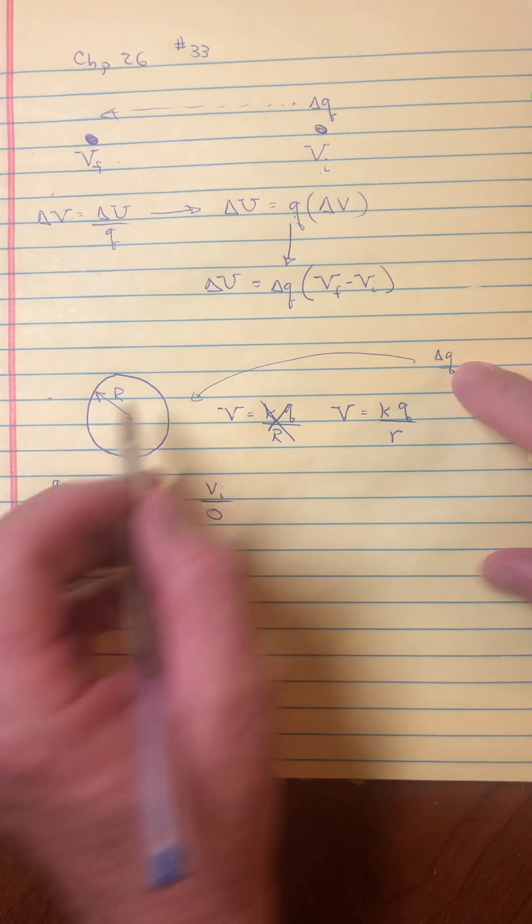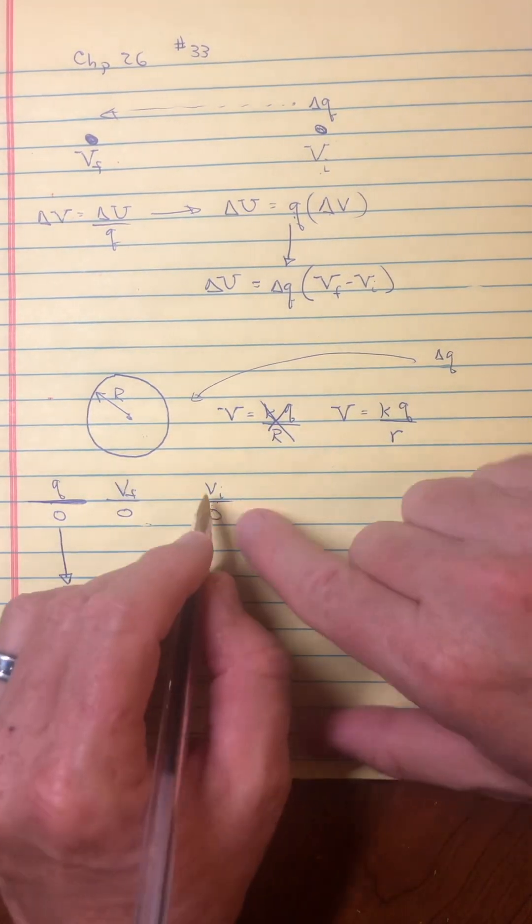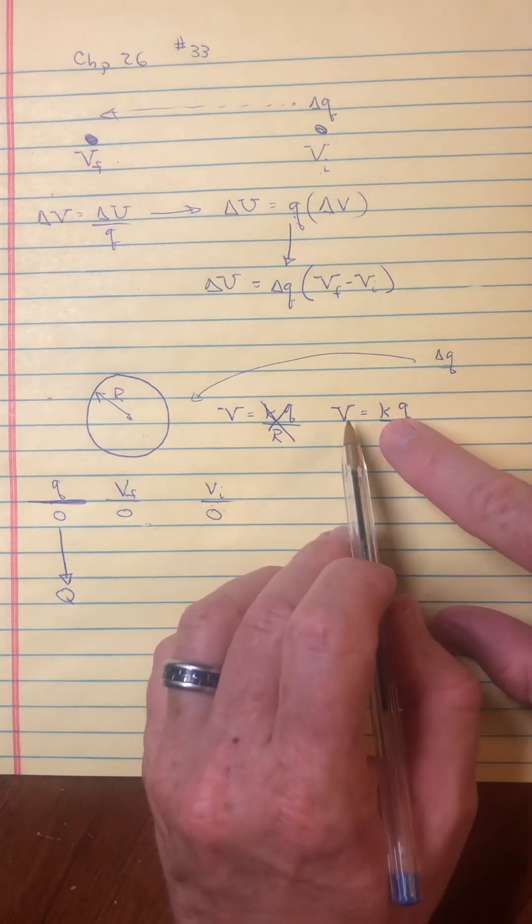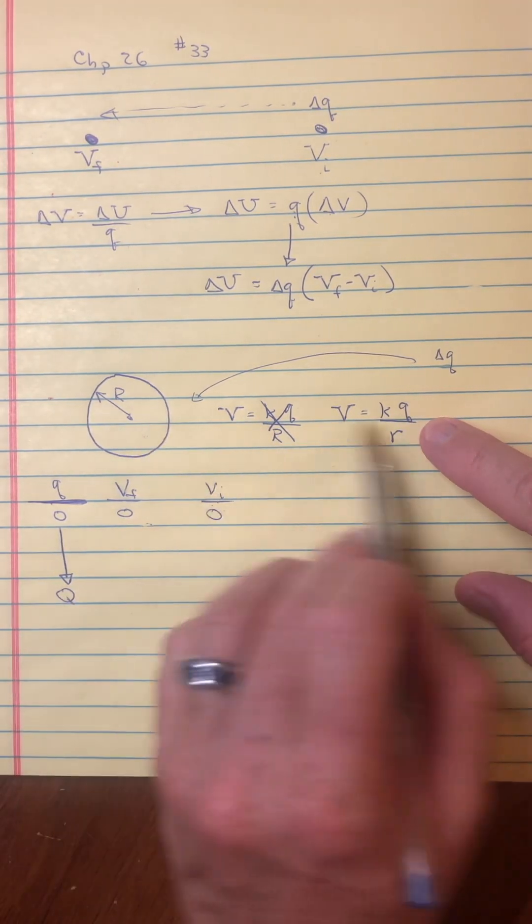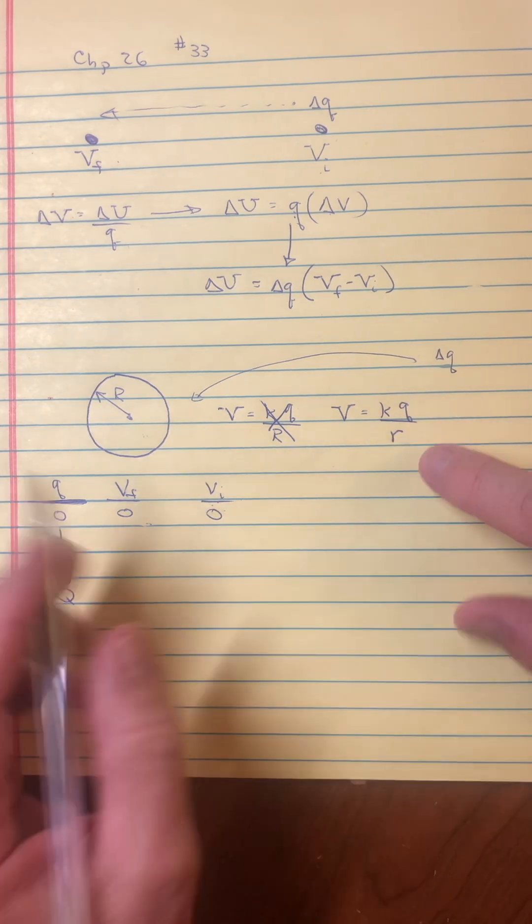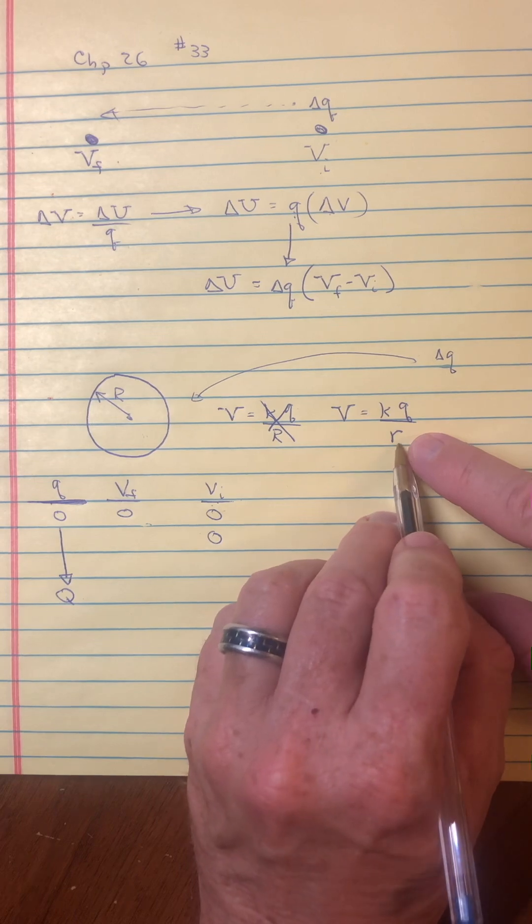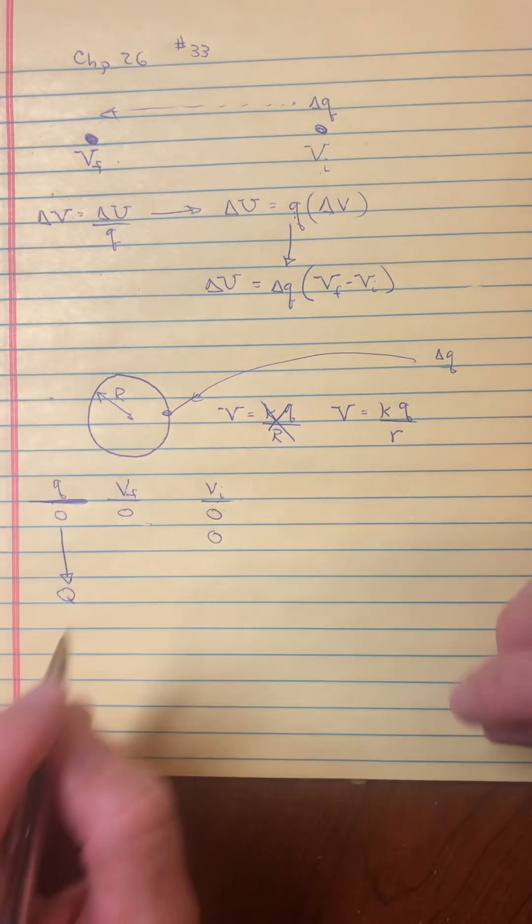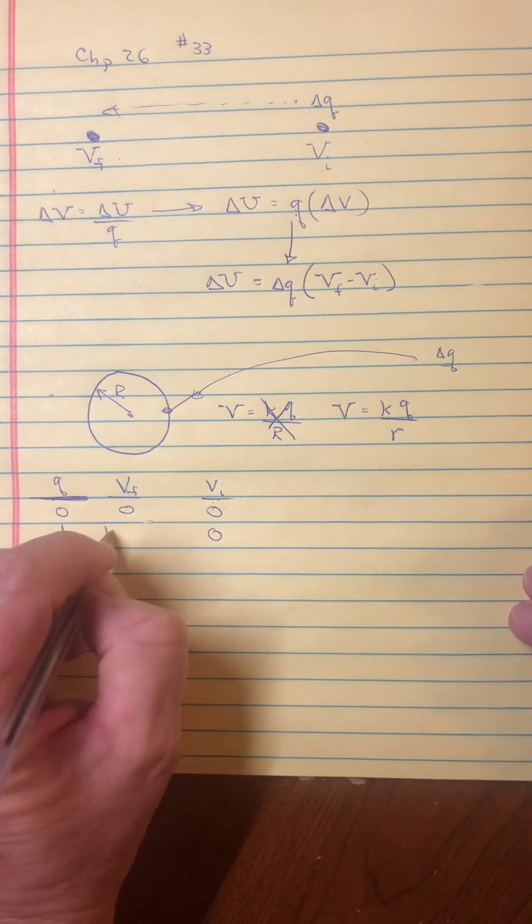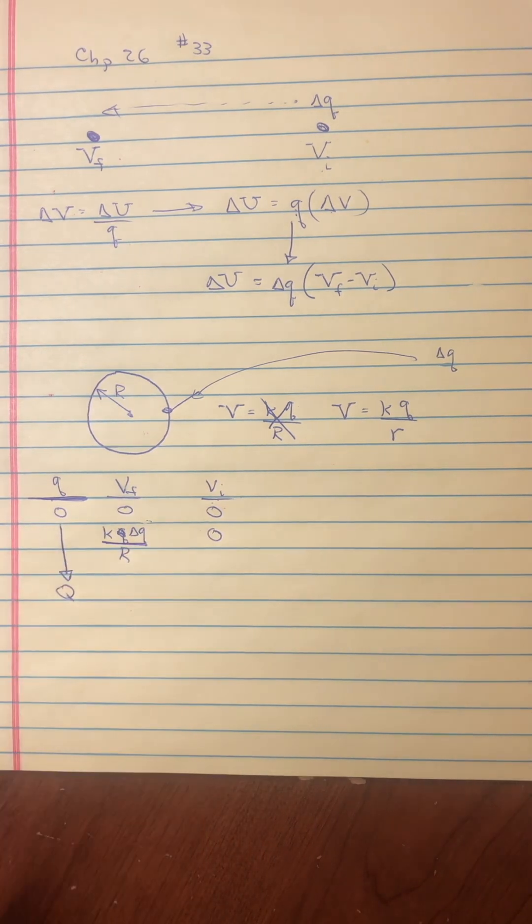But then if you bring one little chunk of delta Q over, you'll have something that looks like this. The initial would be calculated using a small amount of charge delta Q, but you're really far away so you still get zero, something over a big number. And then the final potential is what you get when you place it right on that surface. So that would be K times delta Q over R.